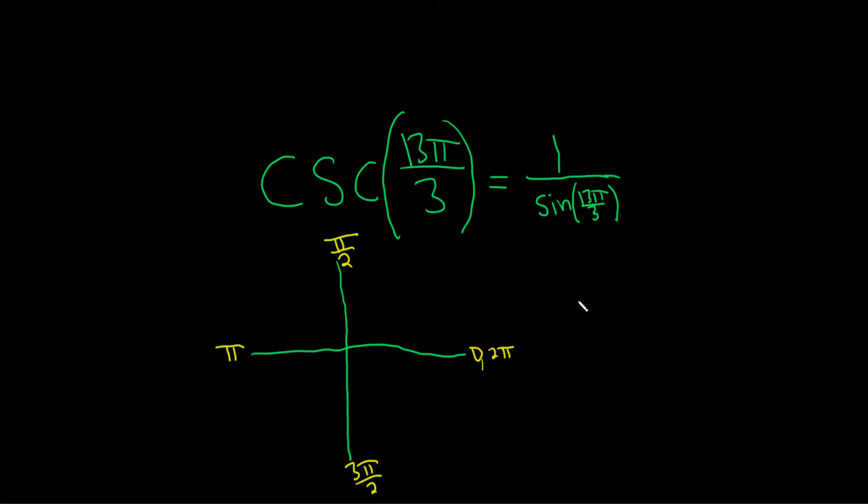So let's think of 2π as a number over 3. That'll give us an idea of where 13π over 3 is. So 2π as a number over 3 is 6π over 3. We're not quite there yet if we go around once.